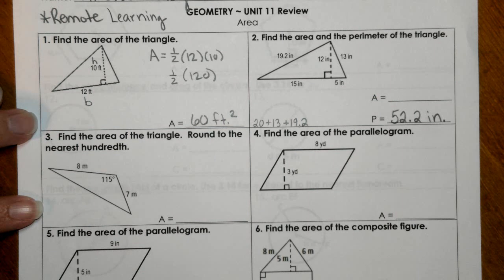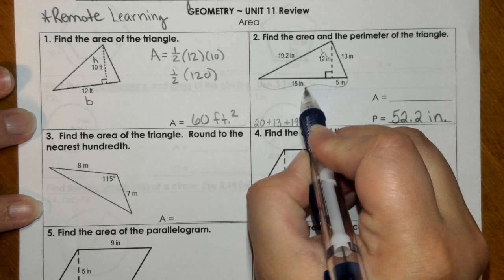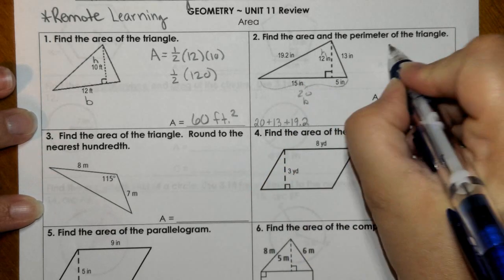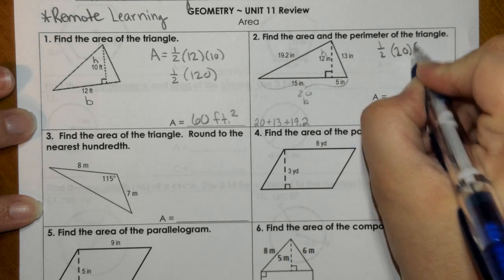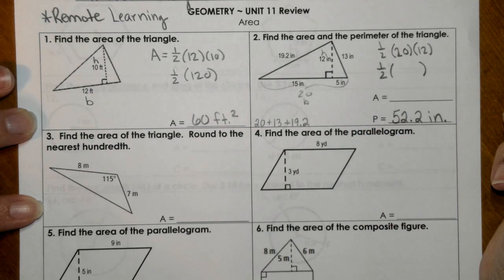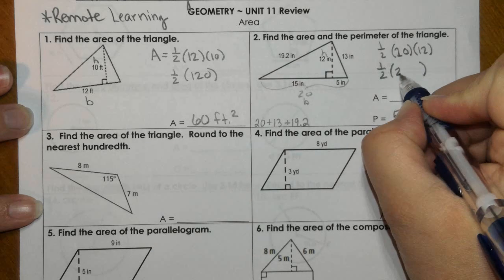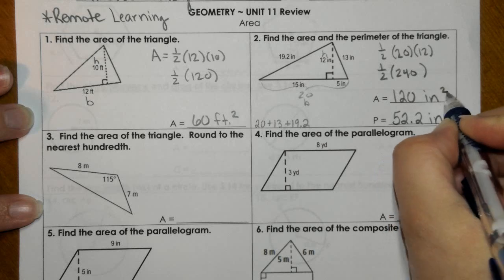For the area, this is your height and your base would be 20. So one half times 20 times 12. 20 times 12 is 240, and then half of that would be 120 inches squared.